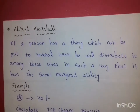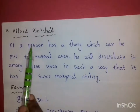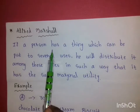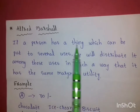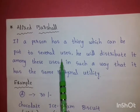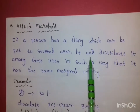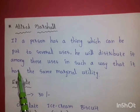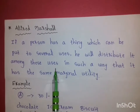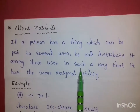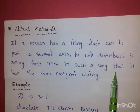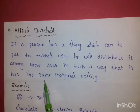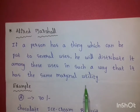Definition: According to Alfred Marshall, if a person has a thing which can be put to several uses, he will distribute it among these uses in such a way that it has the same marginal utility.